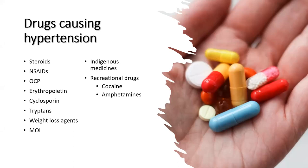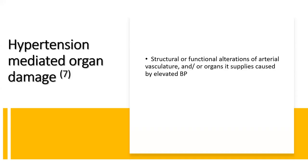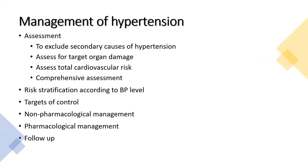Drugs causing hypertension were discussed in the last presentation. An interesting point: chronic daily use of paracetamol can increase the relative risk of hypertension, particularly in people with osteoarthritis and rheumatoid arthritis. Hypertension-mediated organ damage will be skipped as it was covered previously, and we move on to management.